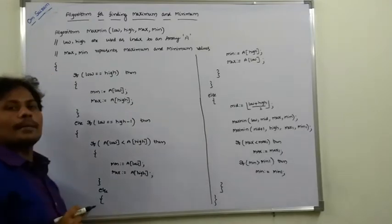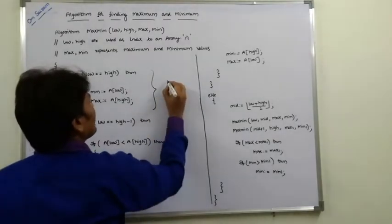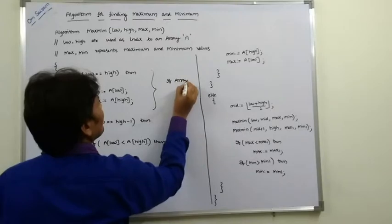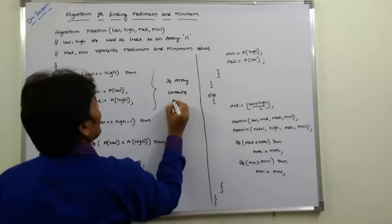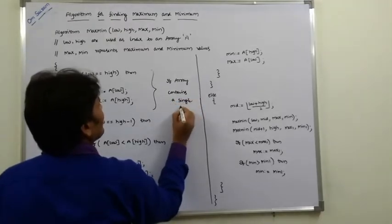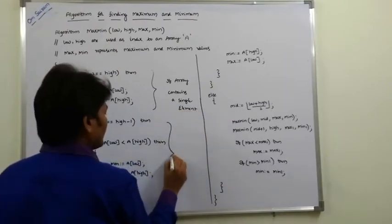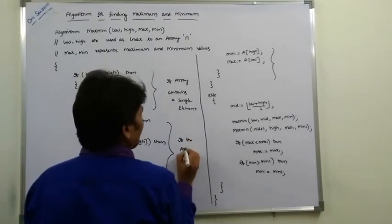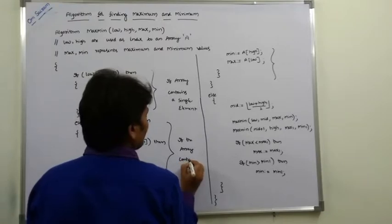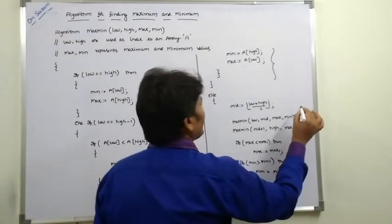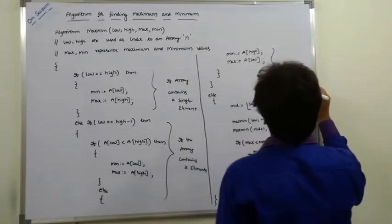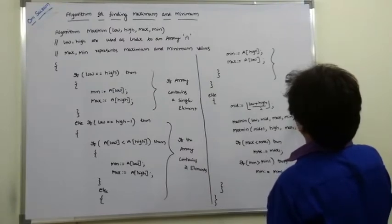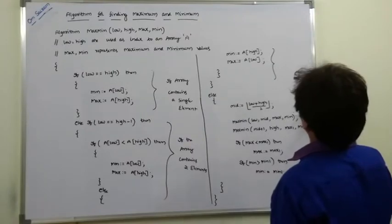This algorithm consists of mainly three parts. The first part handles the case when the array contains a single element. The second part handles when the array contains two elements. The third part handles when the array contains more than two elements.